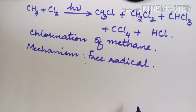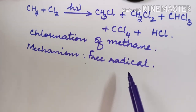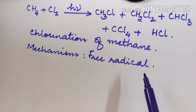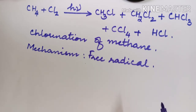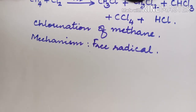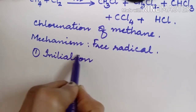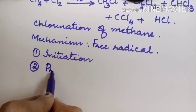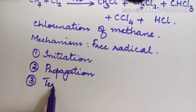Free radicals are species which contain odd electrons, due to which they are highly reactive because they are unstable. Free radicals have unpaired electrons; due to the presence of unpaired electrons, they are highly unstable and act as very reactive species. The mechanism follows three simple steps: the first is known as the initiation reaction, the second is the propagation reaction, and the third is the termination reaction.